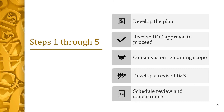Step 5 is the schedule review and concurrence. This is where the contractor and DOE project teams assess the logical sequencing of the schedule, validate the activities and durations, and verify horizontal and vertical schedule integration and traceability. Upon approval of the IMS, the contractor proceeds to Step 6.